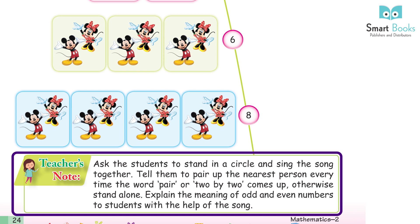Teacher's note: ask the students to stand in a circle and sing the song together. Tell them to pair up with the nearest person every time the word 'pair' or 'two by two' comes up, otherwise stand alone. Explain the meaning of odd and even numbers to students with the help of the song.